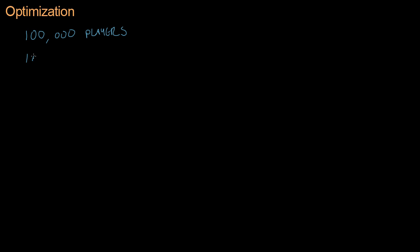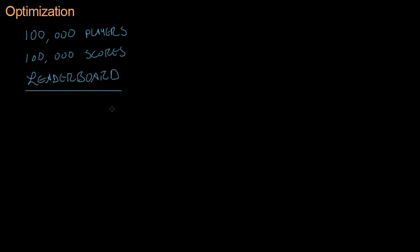Welcome back to the fourth in a series on optimization. Today we're going to consider this problem: let's say you have a hundred thousand players in your game, and they each have a score, which means you have a hundred thousand scores. Our problem is we want to make a leaderboard where the players with the highest scores will appear.